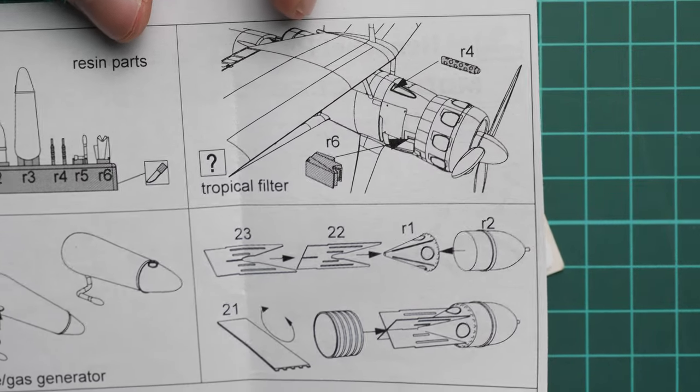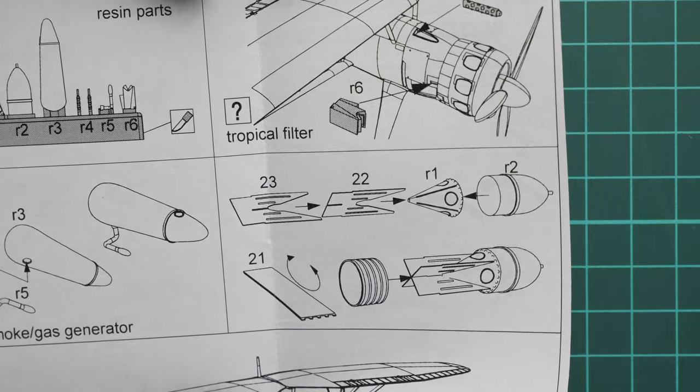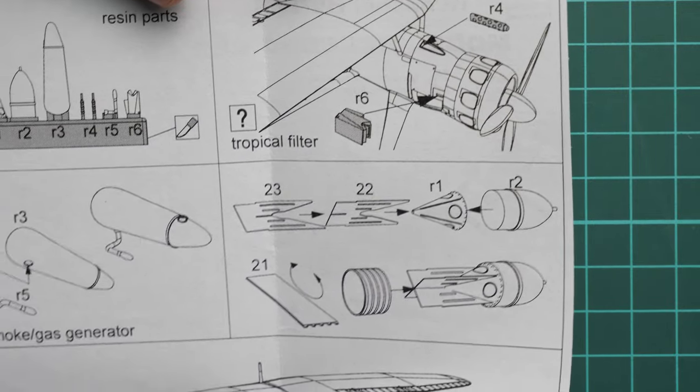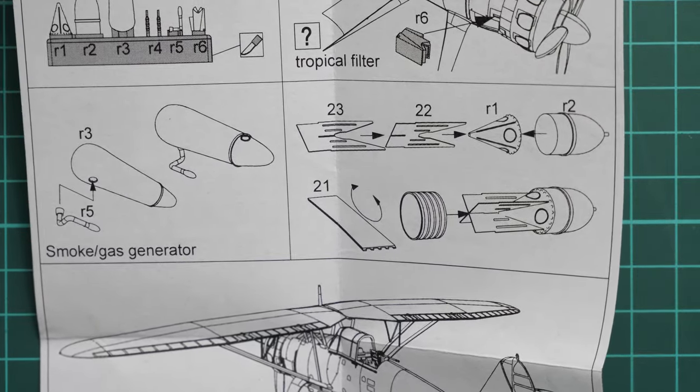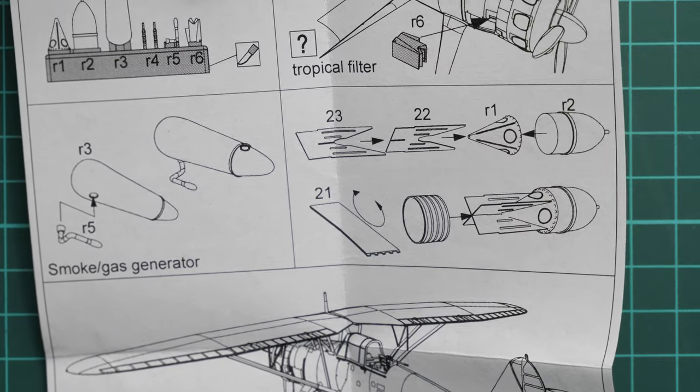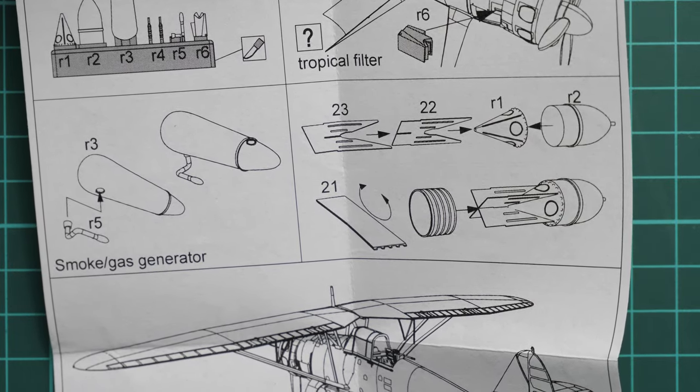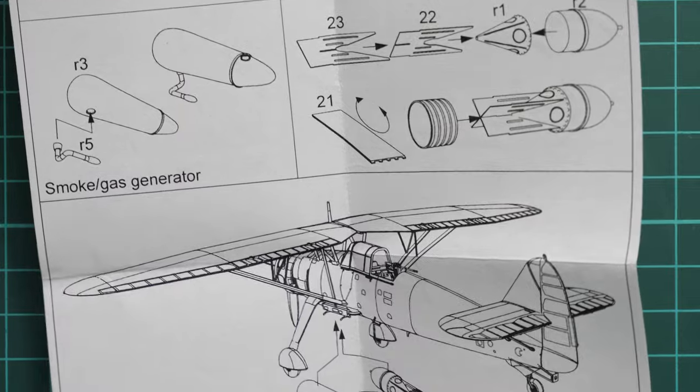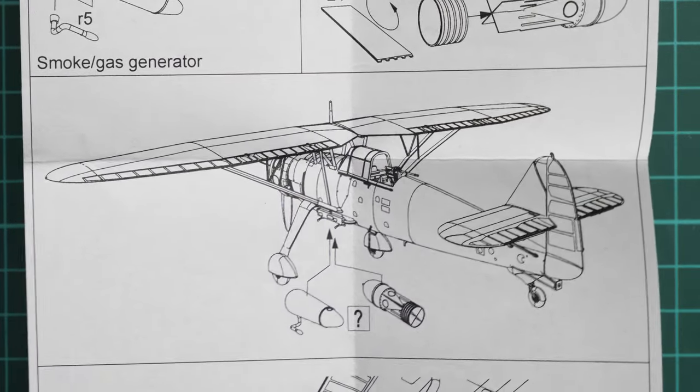Here we continue with the tropical filter - it will depend on the marking you'll choose. We also have machine gun upgrade and next, the smoke gas generator, that's quite interesting. Next we continue with the bomb, and all this stuff was installed under the fuselage, so again it will depend on the marking you'll choose for your aircraft.